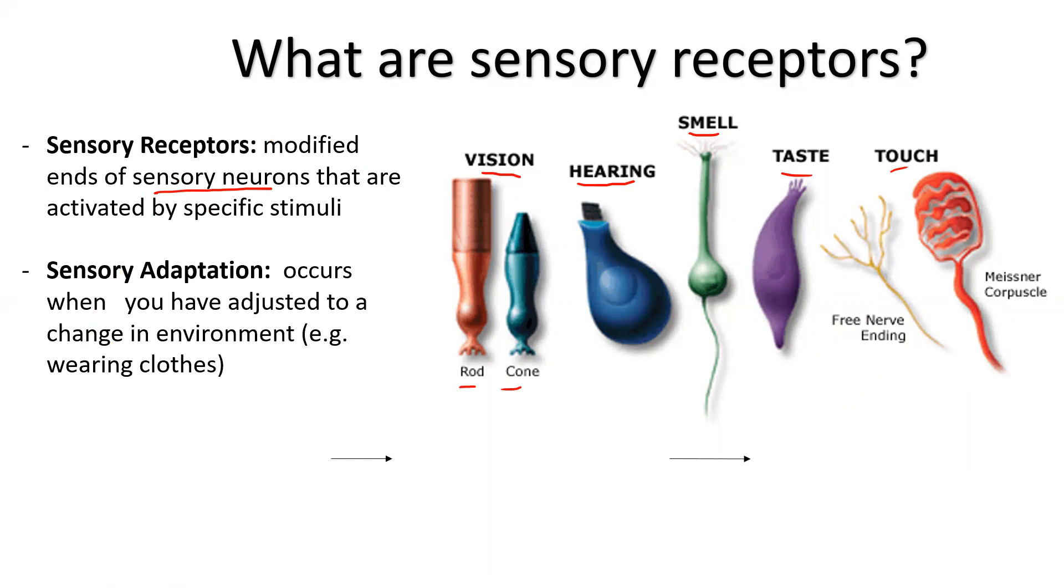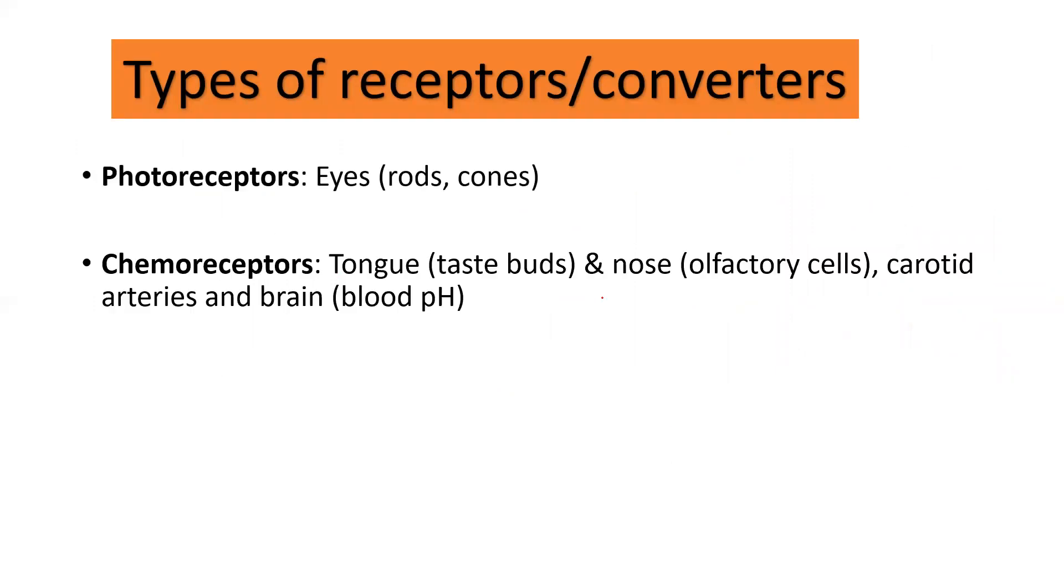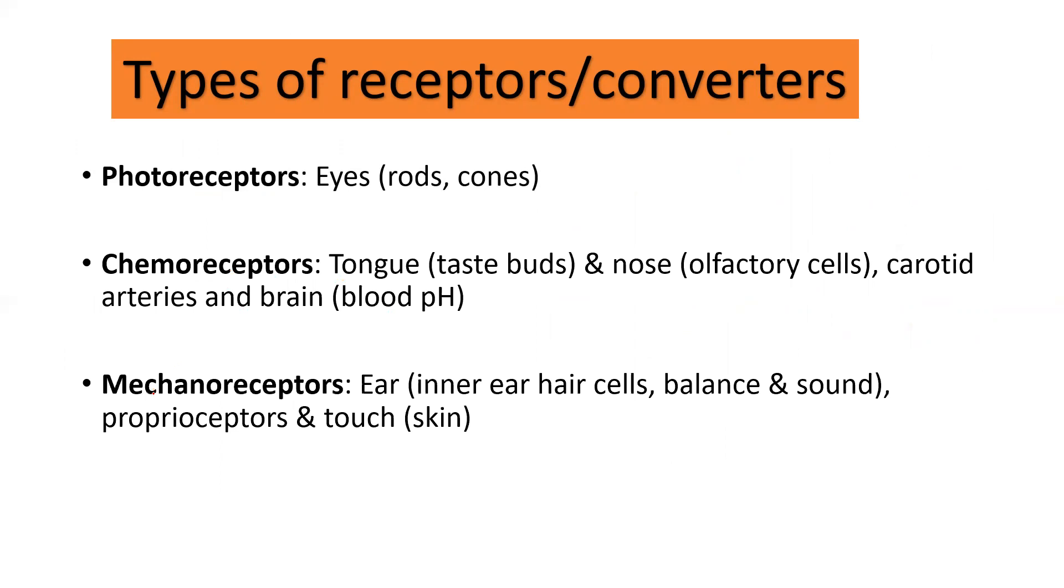That's sensory adaptation. Can you hear the buzzing of some motor outside? Can you hear the cars outside? You'd actually have to think about it. So sensory receptors, sensation. Perception is the interpretation. Photoreceptors are eyes. Chemo is for tongue and nose, chemicals. Mechano is for your ear, mechanical. And thermo is for skin, for hot and cold.